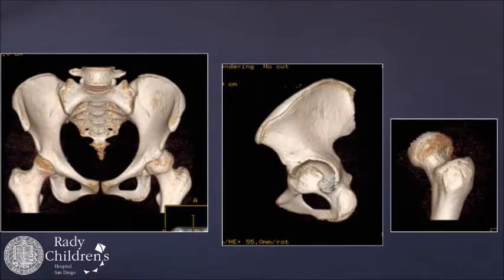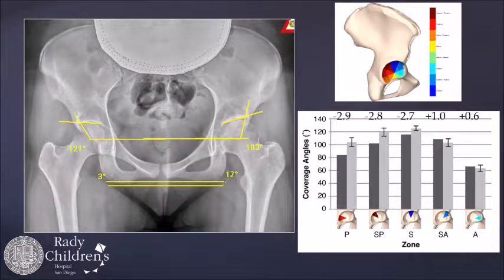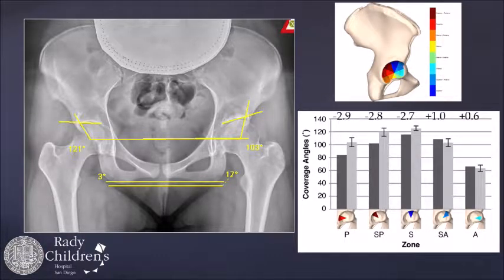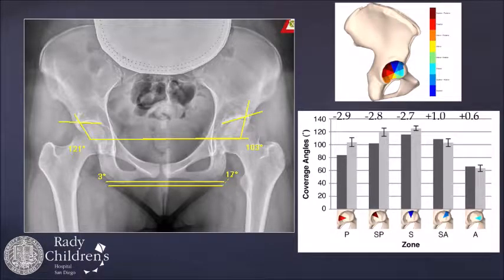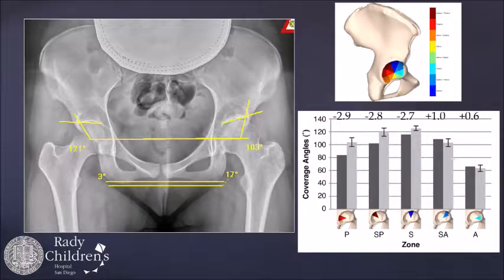The MRI shows the CAM lesion on the radial sequences as well as labral pathology. We get the CT scan to define the 3D morphology of the acetabulum. The standard radiographic measurements show a lateral center edge of 13 and tonus angle of 17. The CT analysis shows she is Z-score less than minus 2, primarily superiorly, superior posterior, and posterior. Unlike the standard DDH dysplasias that are anteriorly deficient, she was more deficient posteriorly — confirmed by the pre-op crossover sign.